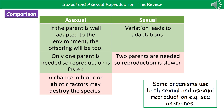Some clever organisms use both types of reproduction. Sea anemones, for example, don't rely on just one method. They use both sexual and asexual reproduction. If they can't find another sea anemone to mate with, they can simply revert to asexual reproduction, so they always have a backup method of reproducing.